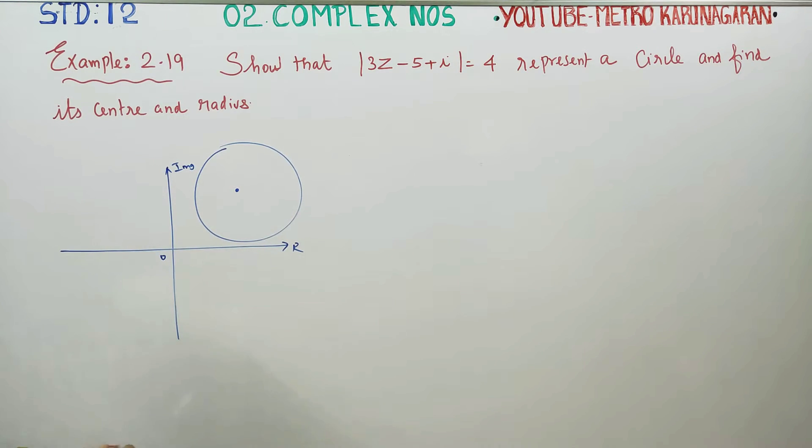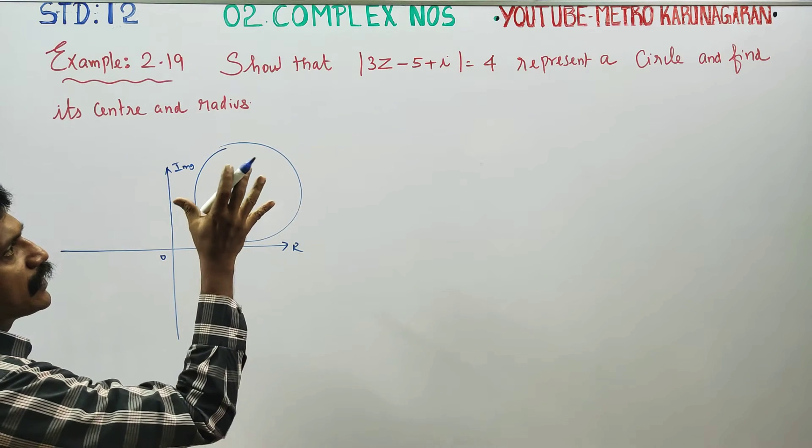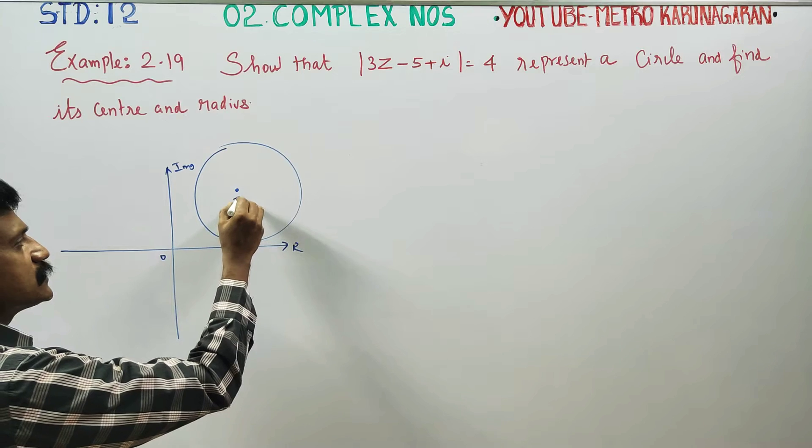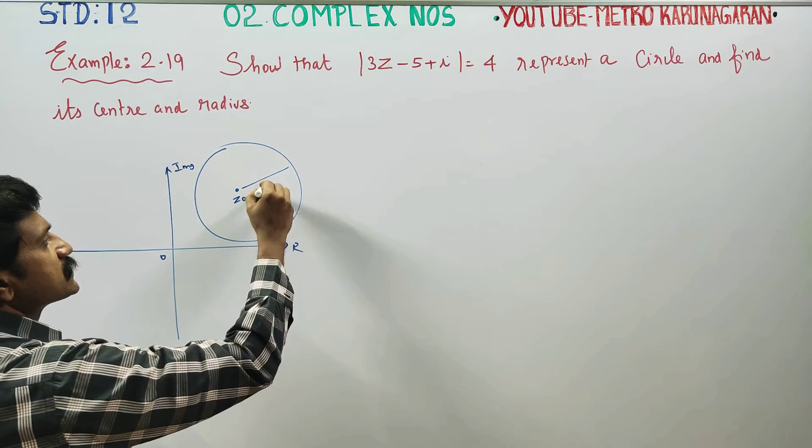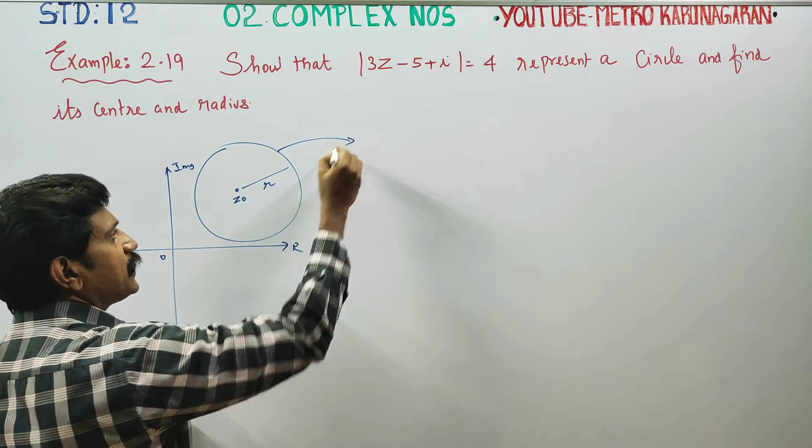If you have a complex number, you have to represent a circle. This is the center, this is the complex number. This will be the radius. If you look at this equation, how do you have a formula in this style?